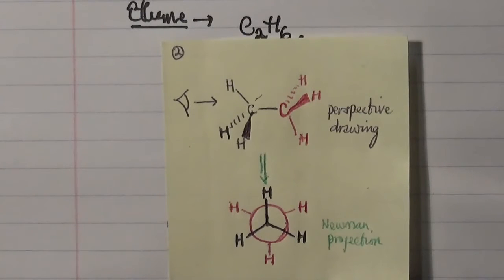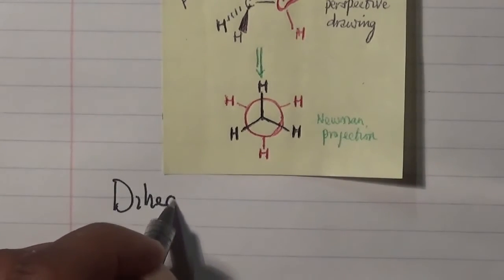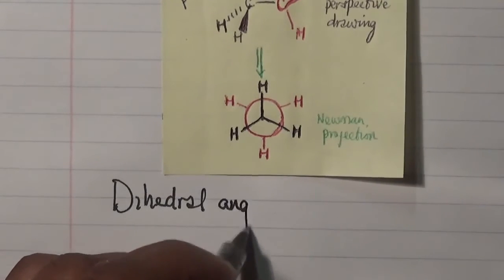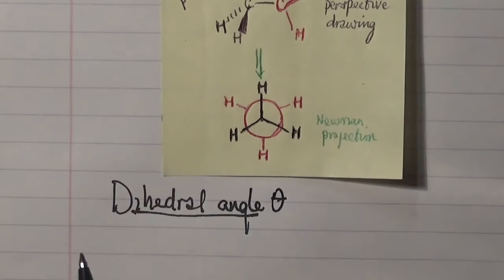Now what you realize is that under this Newman projection, an angle between the carbon-hydrogen bond in the front and the carbon-hydrogen bond at the back is called the dihedral angle. So this dihedral angle focuses on two different conformations because it reveals the different types of conformations that exist in various molecules. In this case for ethane, ethane will have two dihedral angles which reveal two different conformations.